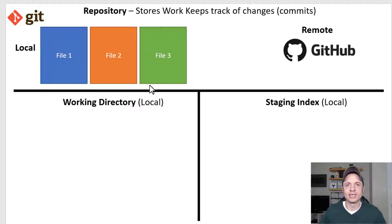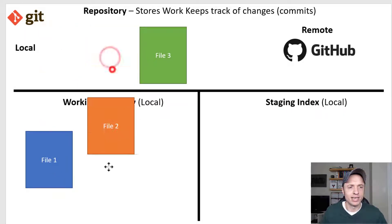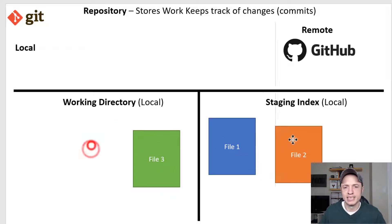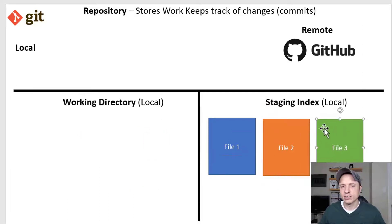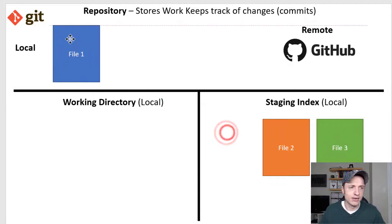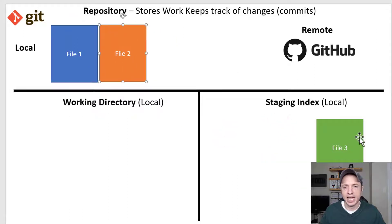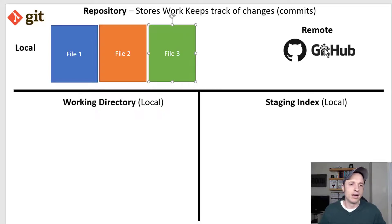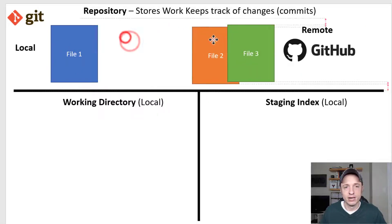We've talked about this diagram before, but let's cover it real quick. We have all of our files in our working directory — that's where we do our work on our local device. When we're ready to commit some files, we first move them to the staging index or staging area, which is also on our local device and prepares the files for committing. When we commit, the files move up to our local repository. Then if we're doing a remote repository — we're using GitHub — we can push the files from our local repository over to the remote repository on GitHub.